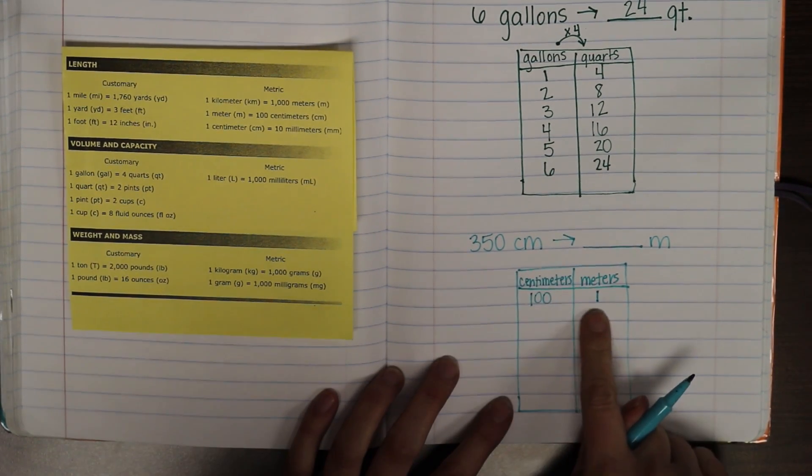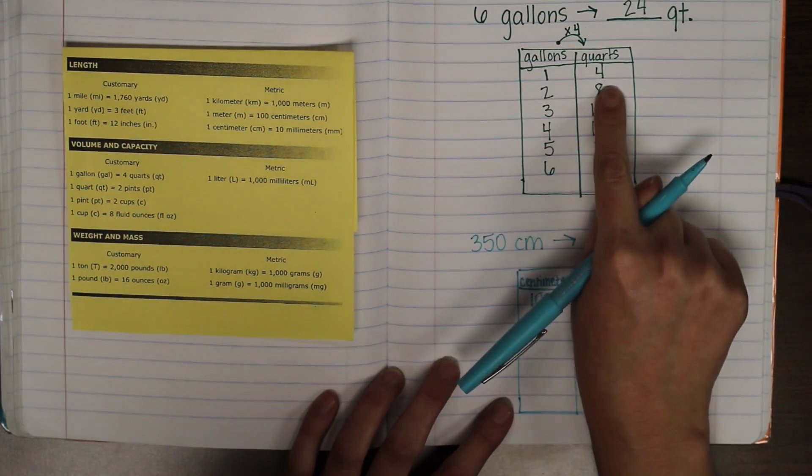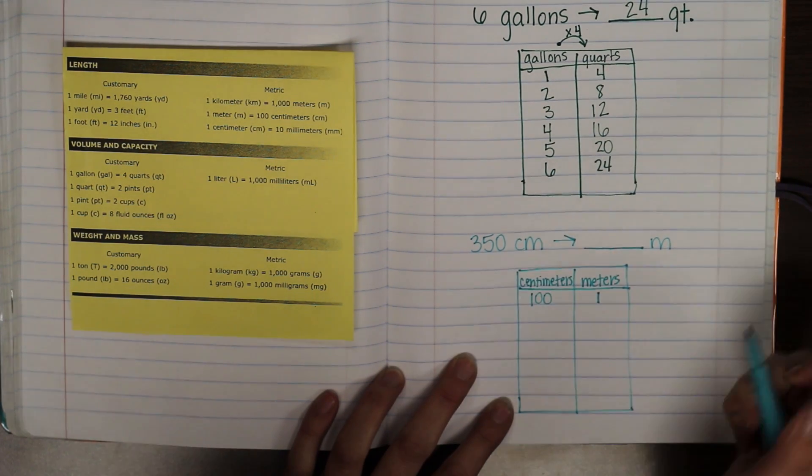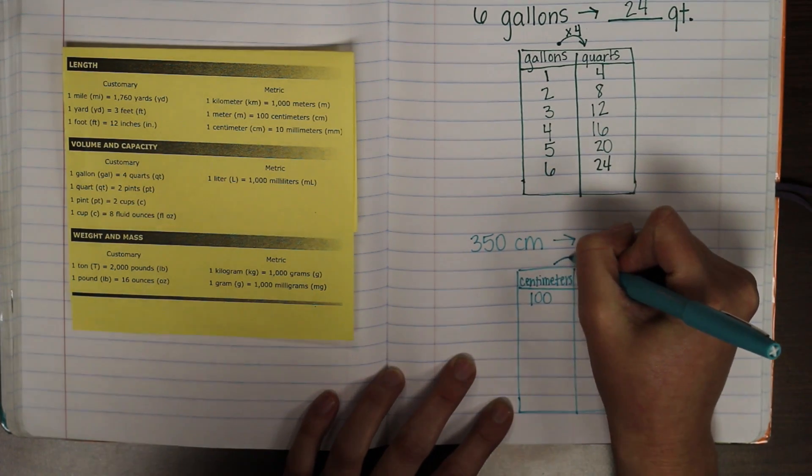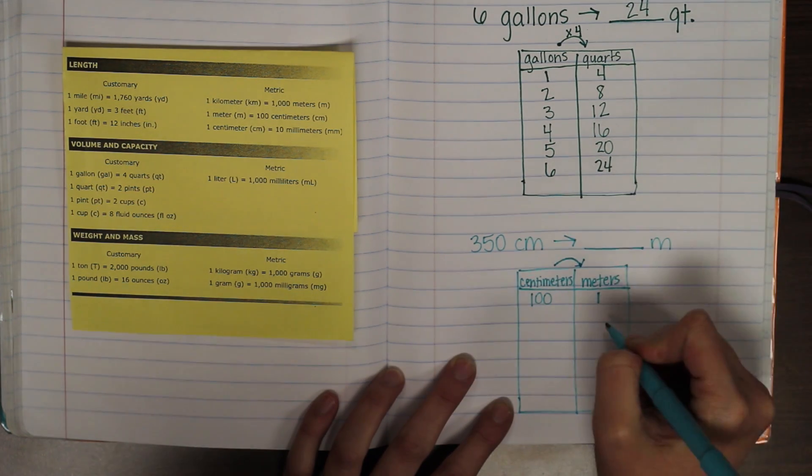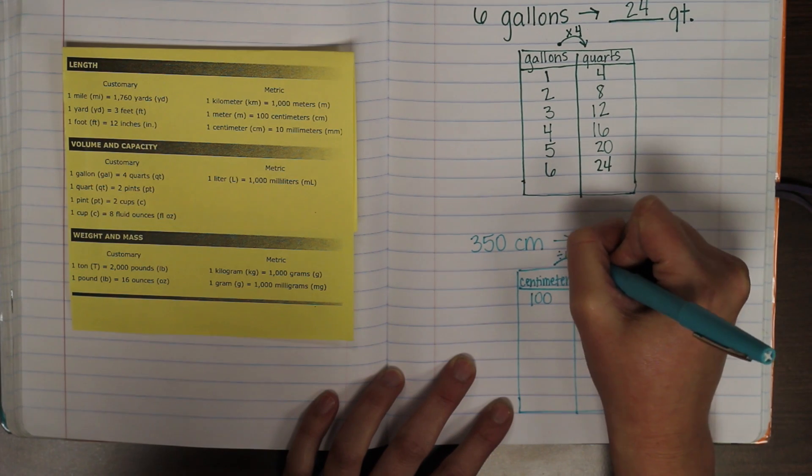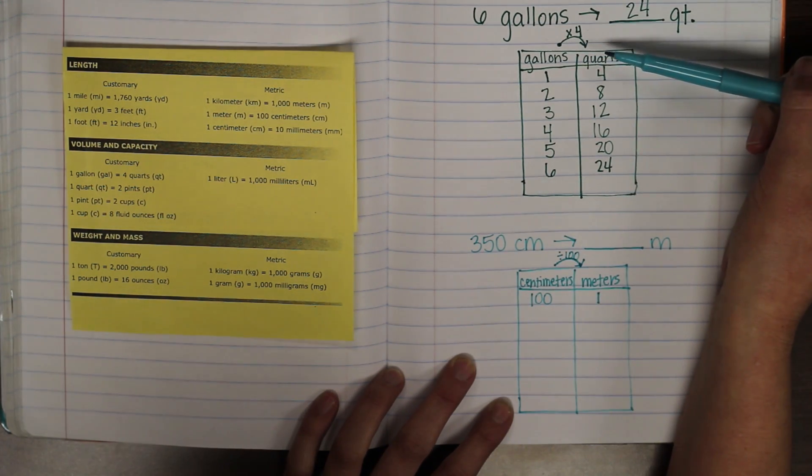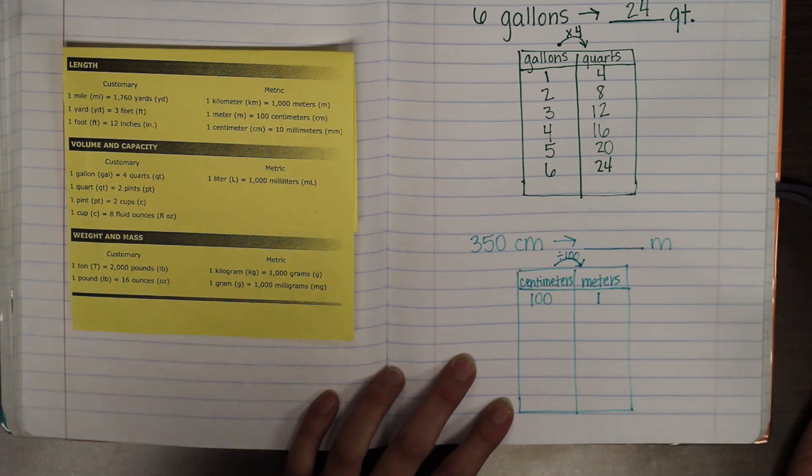Now, notice the relationship is a little different here. Up here, I was increasing. Here, I am decreasing. And we are decreasing by a hundred to one. So, in this one, we're going to be dividing by a hundred. Okay. For conversions, we're either going to be multiplying by a number or dividing by a number. Okay.